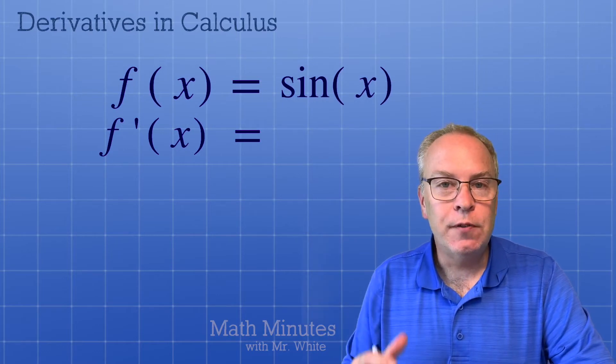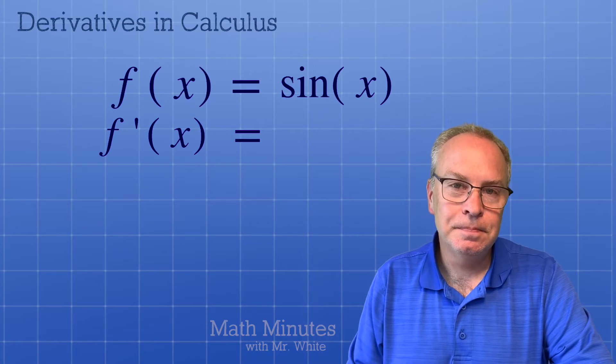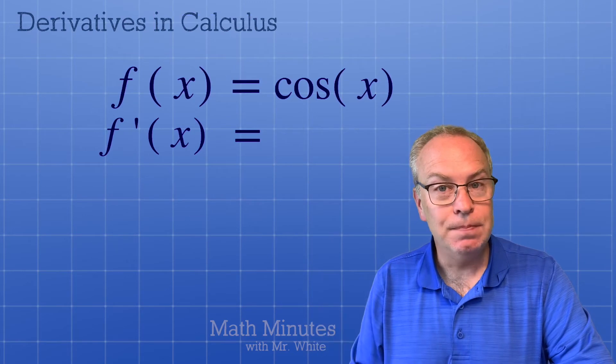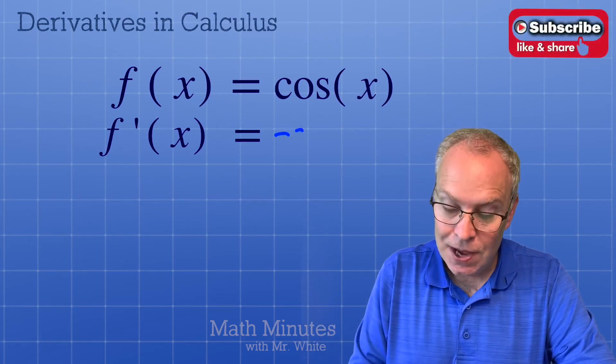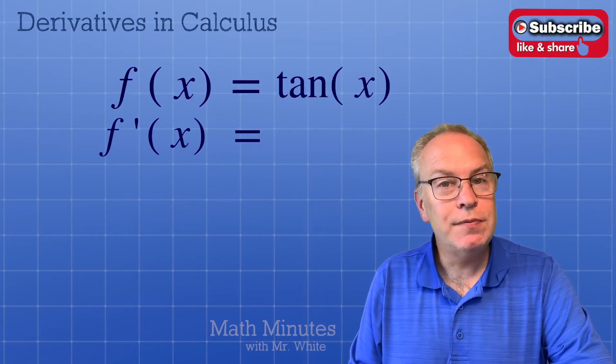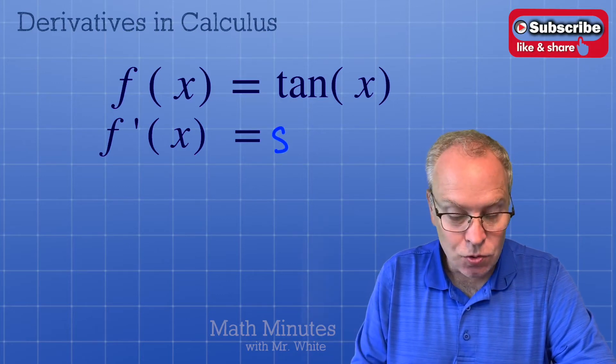Now let's look at the trig functions. What's the derivative of sine? Cosine. Good. What's the derivative of cosine? Negative sine. What's the derivative of tangent? Secant squared.